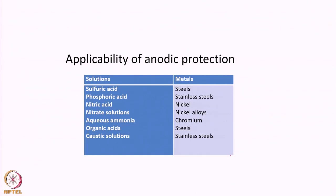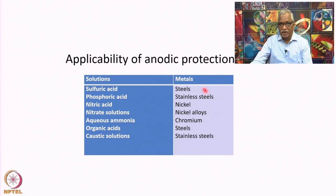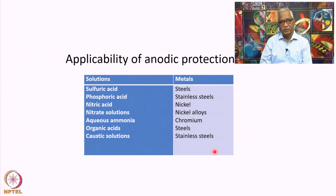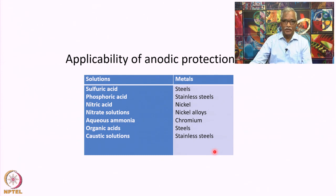A list of applicable systems includes sulfuric acid, phosphoric acid, nitric acid and nitrate solutions, organic acids, and caustic solutions, with corresponding metals listed. This means anodic protection is much more limited in applicability as compared to cathodic protection of engineering structures.